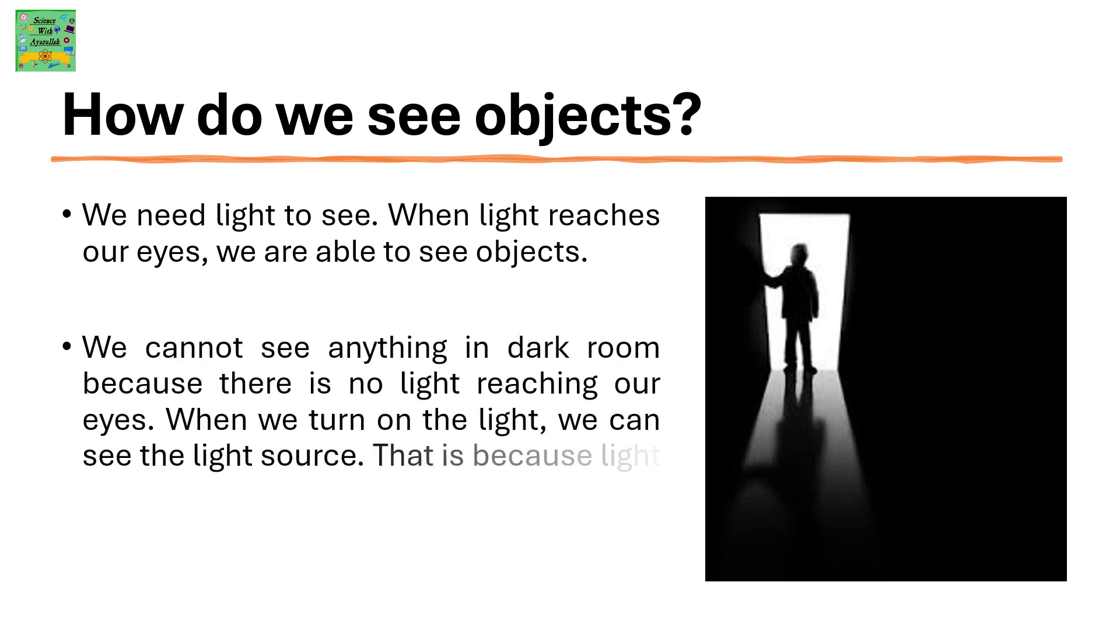We cannot see anything in the dark room because there is no light reaching our eyes. When we turn on the lights, we can see the light source. That is because light from the light source travels to our eyes.